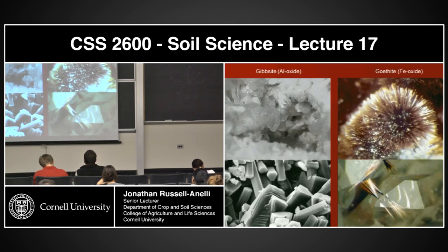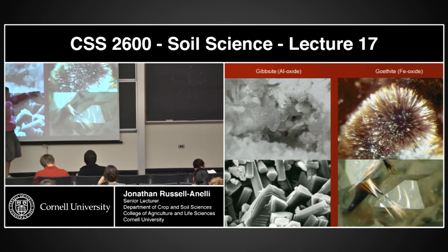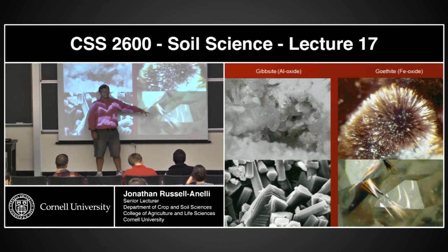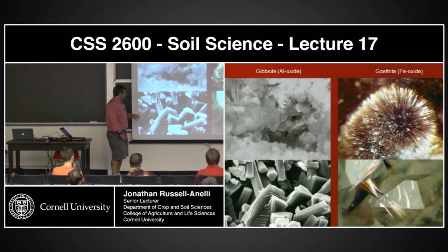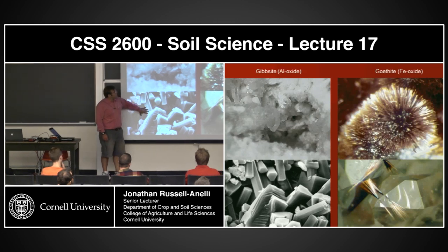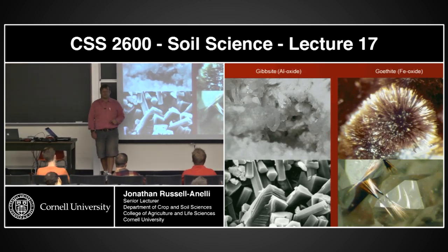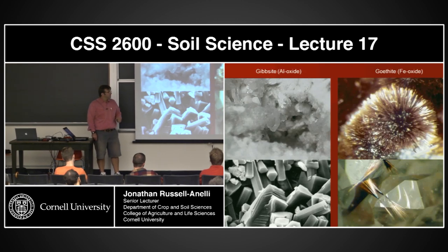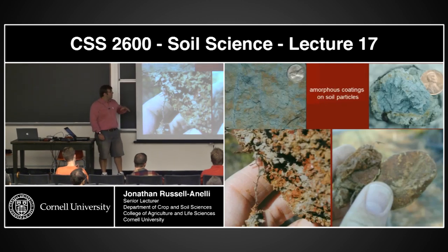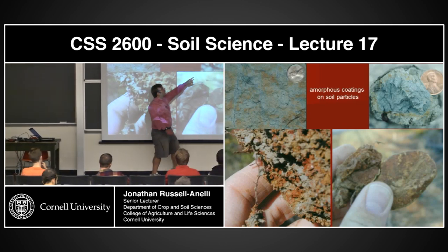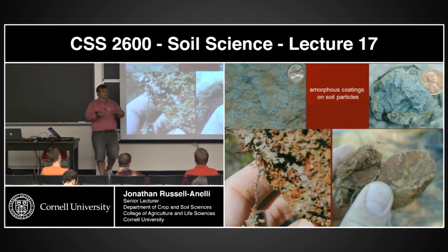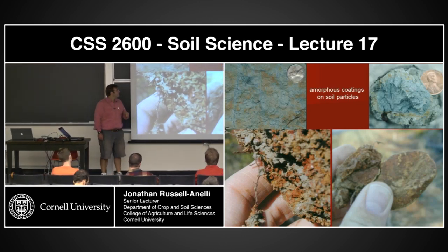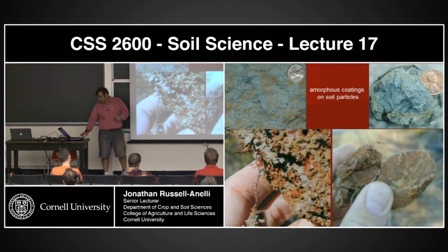Here's what these things look like — here's a gibsite and there's a goethite. Actually very pretty. These are related to fool's gold — iron pyrite. They can form rather large structures. They also have amorphous coatings — these should be familiar. This is what we saw at the bottom of Mount Pleasant, in that valley. Iron accumulations — amorphous, not crystalline.